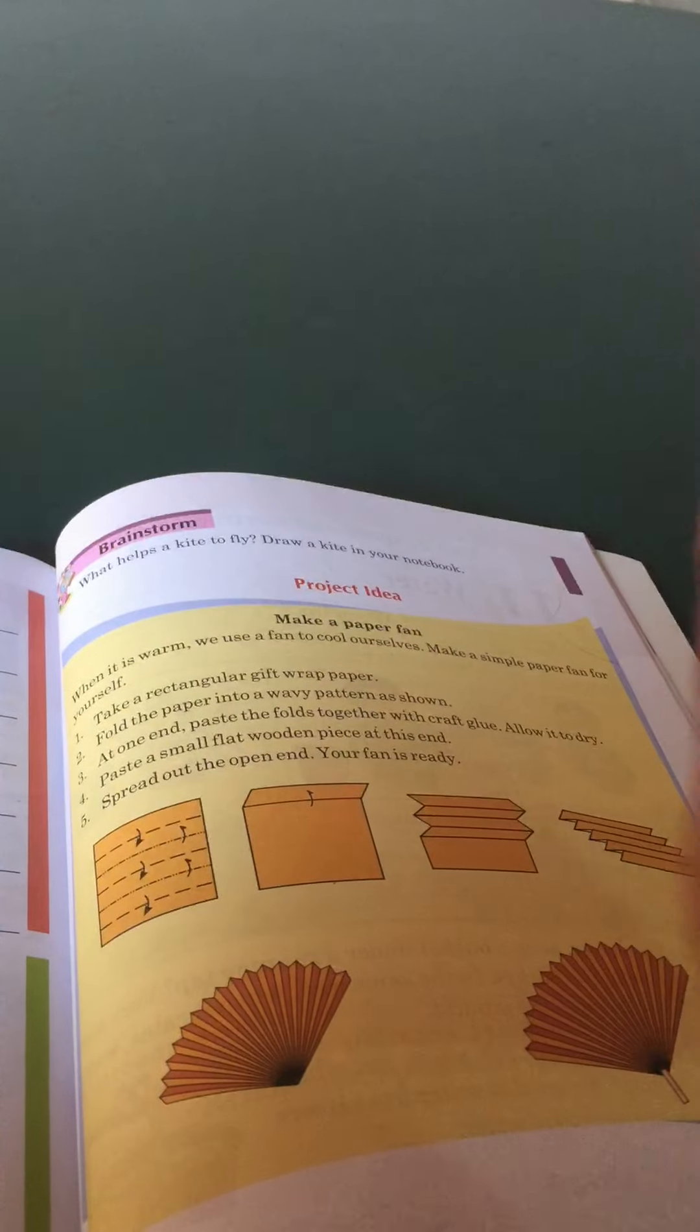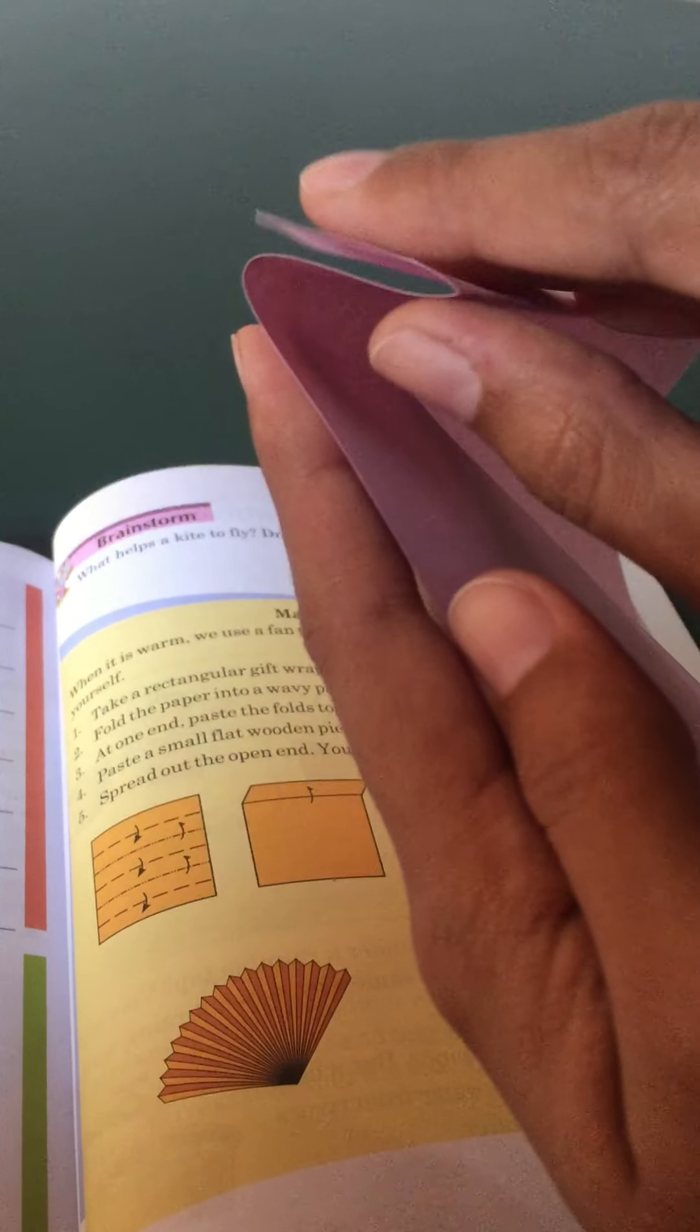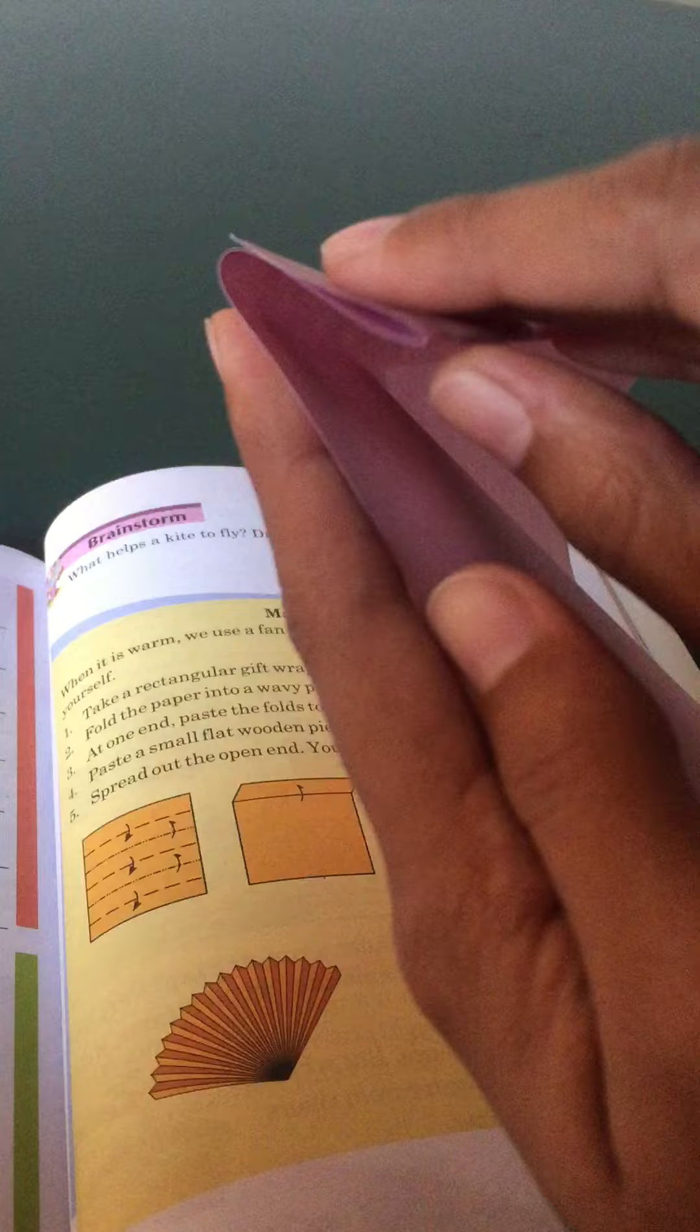When you fold one side then turn your paper this way and here again make your paper fold, same size as here. Same size you will fold down side. Clear? And you will set it.